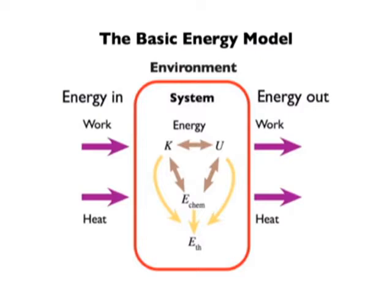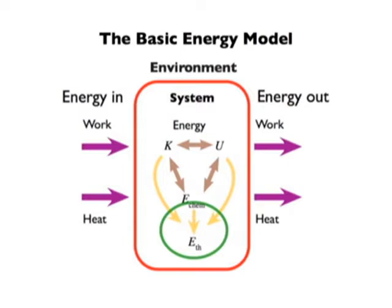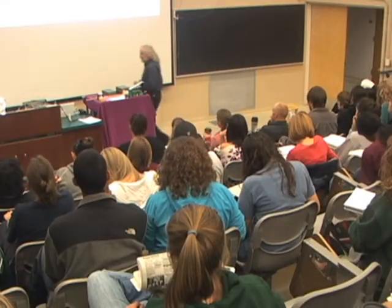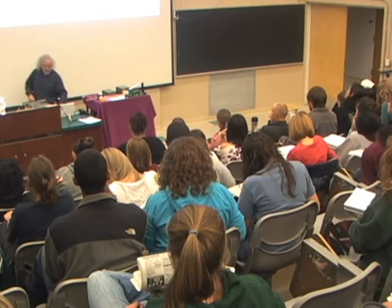And look at thermal energy. Kinetic energy goes to potential energy, potential to kinetic — two-headed arrows. Chemical energy and kinetic energy — two-headed arrows. Chemical and potential — two-headed arrows. Thermal energy — one-headed arrows. Energy goes from kinetic to thermal, chemical to thermal, potential to thermal. It doesn't go back. And in fact, one other aspect of the model that's crucial is that there's a difference between the different kinds of energy.